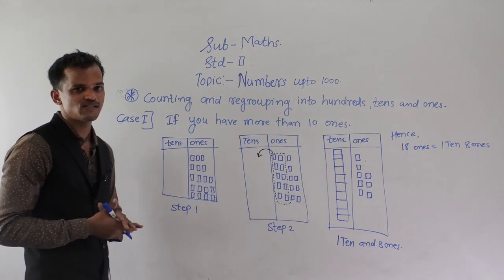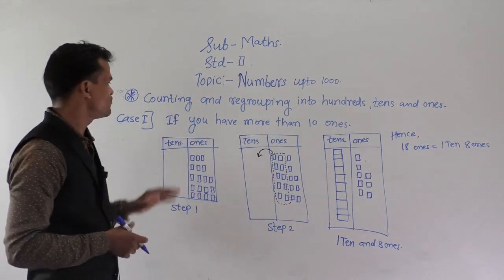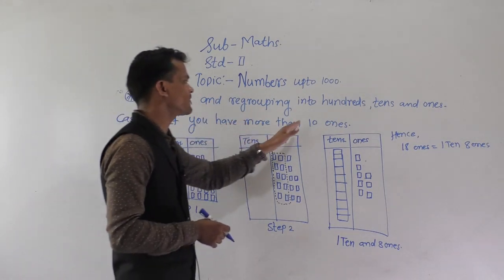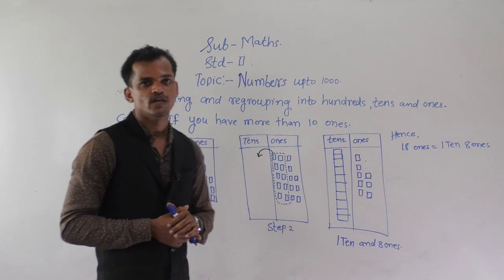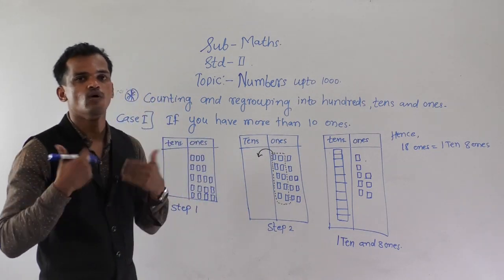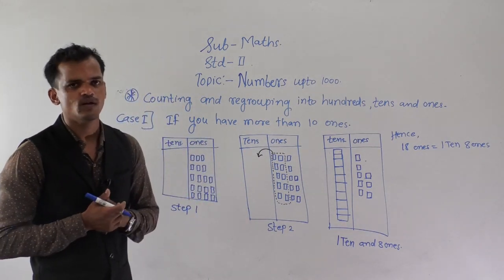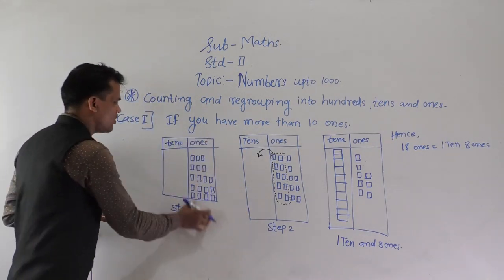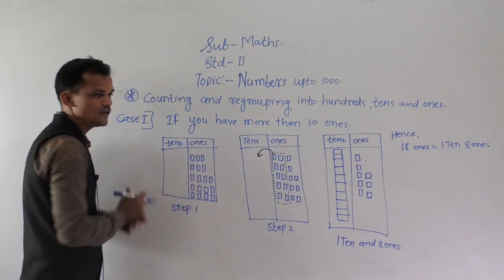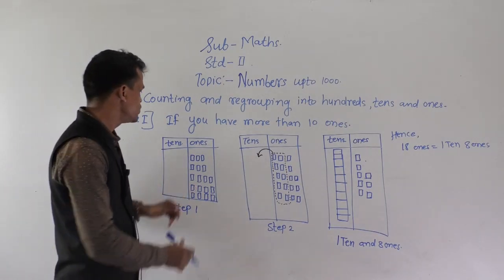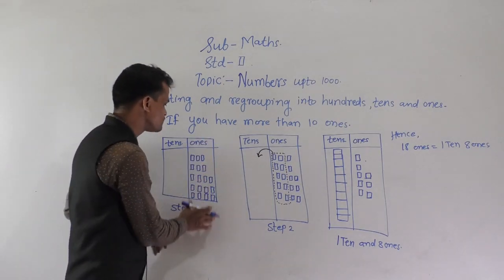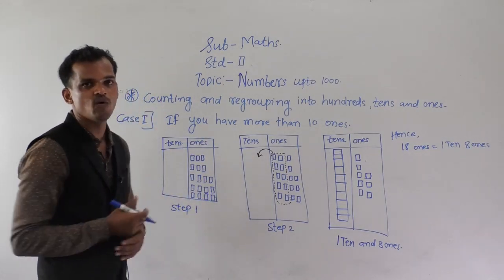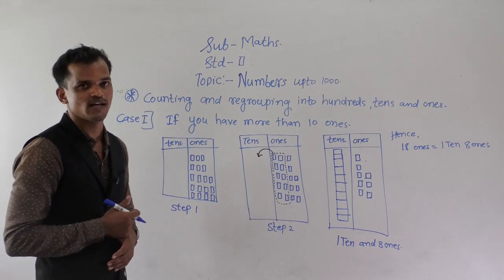There are some cases. The first case is if you have more than 10 ones. See, this is the 1s column and this is the 10s column. The first step is to count how many 1s are there.